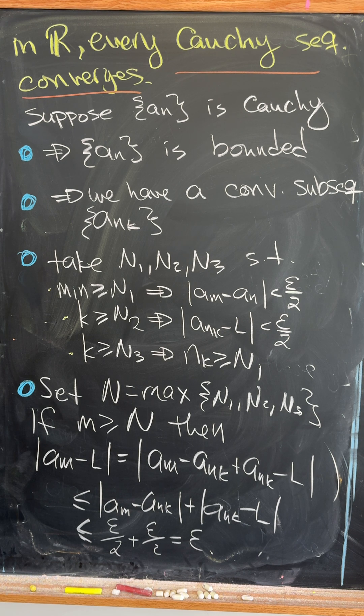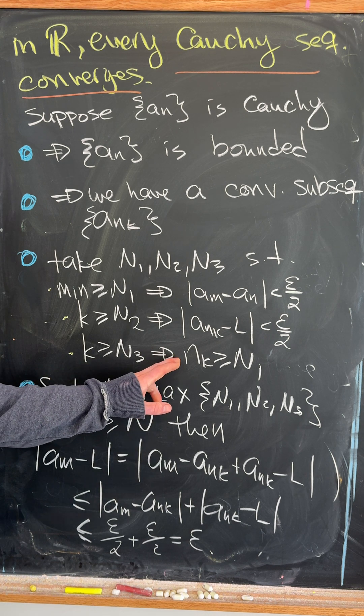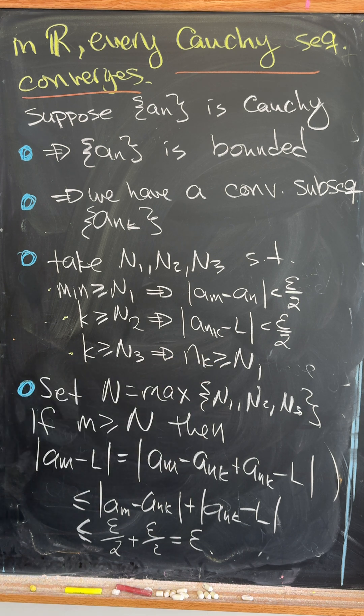And then the N3 is a little bit tricky. It means that the sequence N sub K is bigger than or equal to N1. It has to do with the subsequence as well.